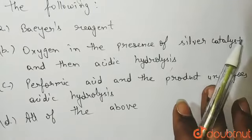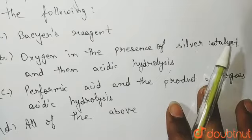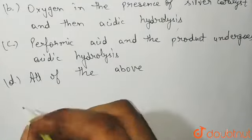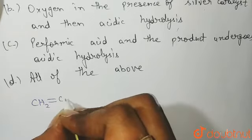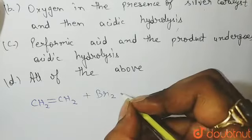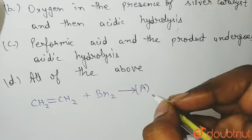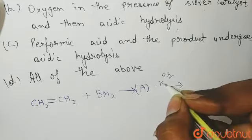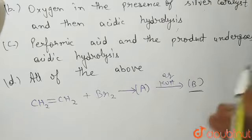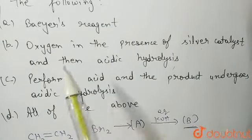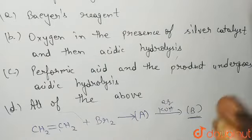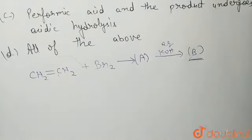So first of all, in the question it is said that there is a compound A formed by the reaction of ethylene — CH2=CH2 — with bromine, Br2. This gives product A. Then product A reacts with aqueous KOH to give product B. We need to determine which of the given reagents, when reacted with ethylene, will give the same product B.